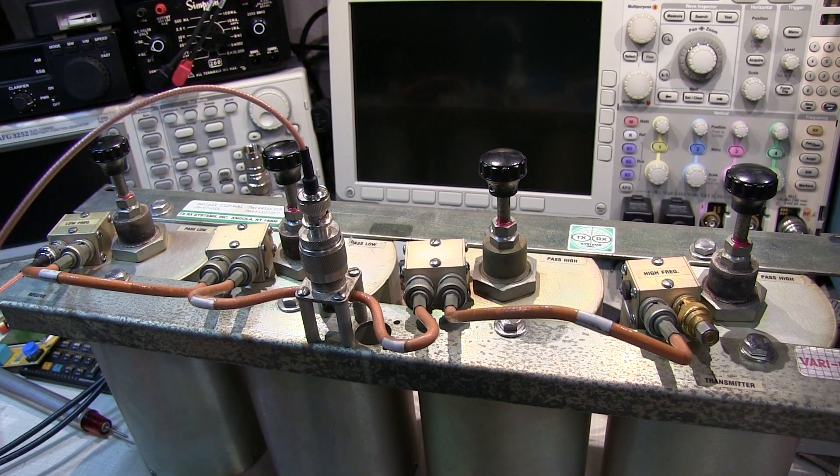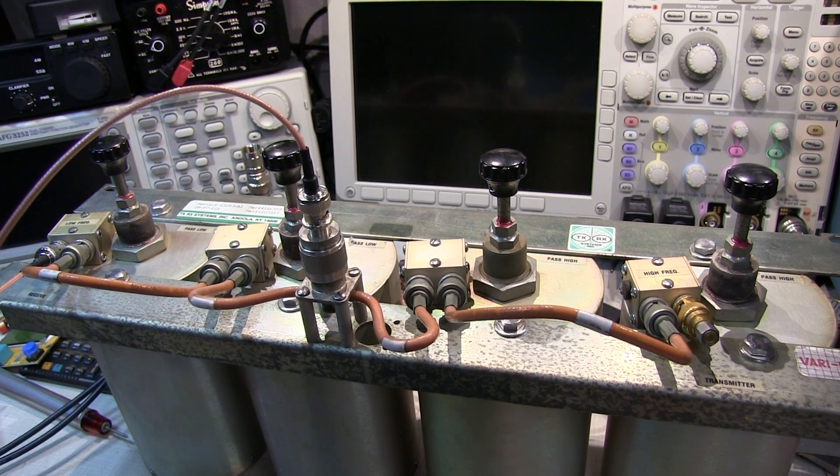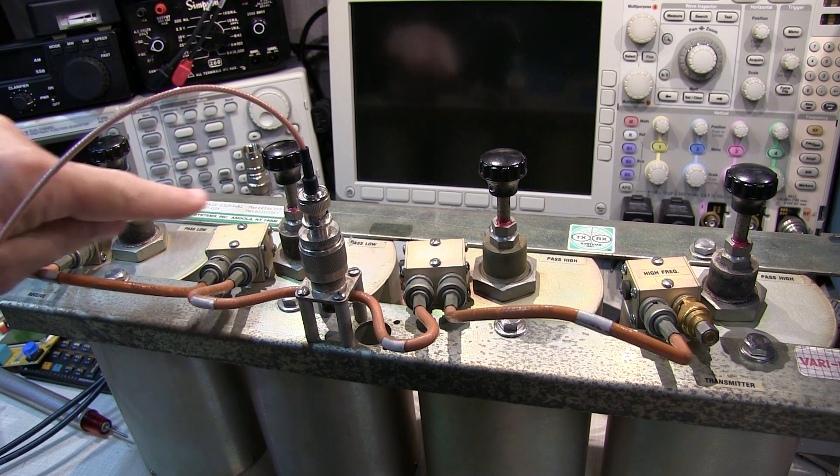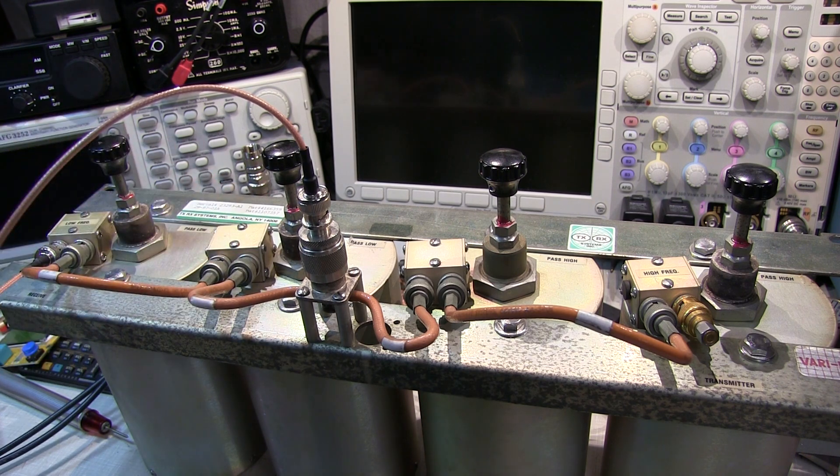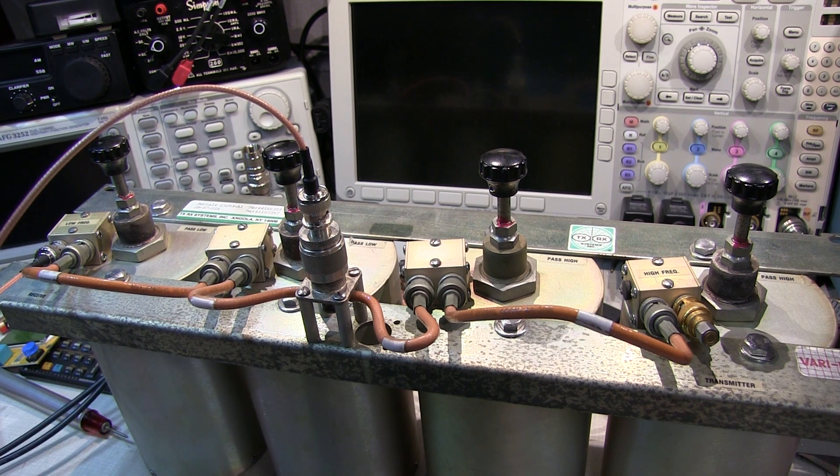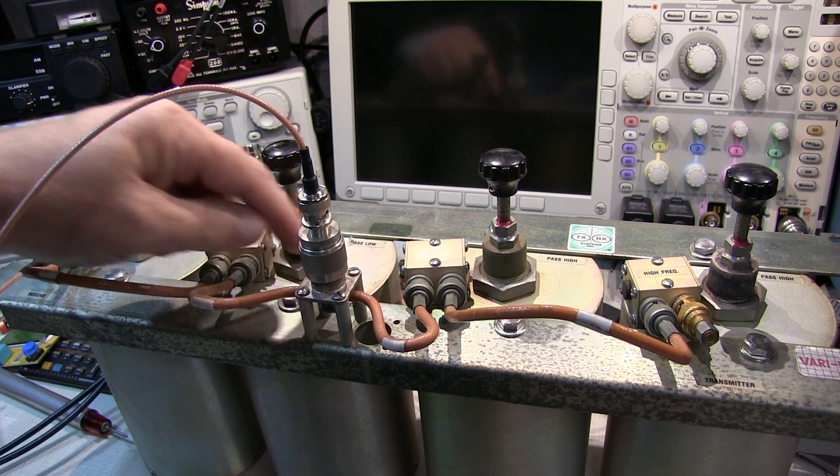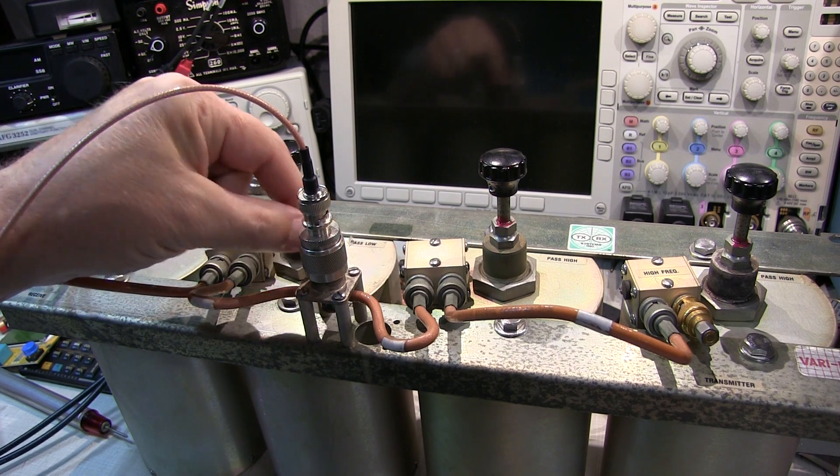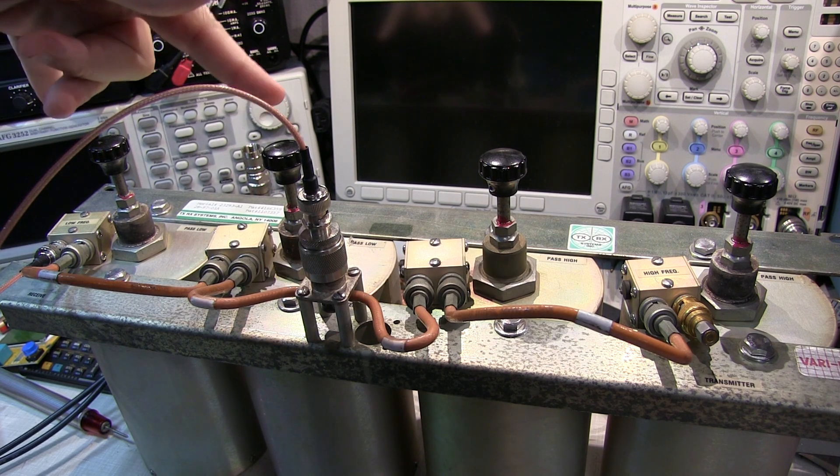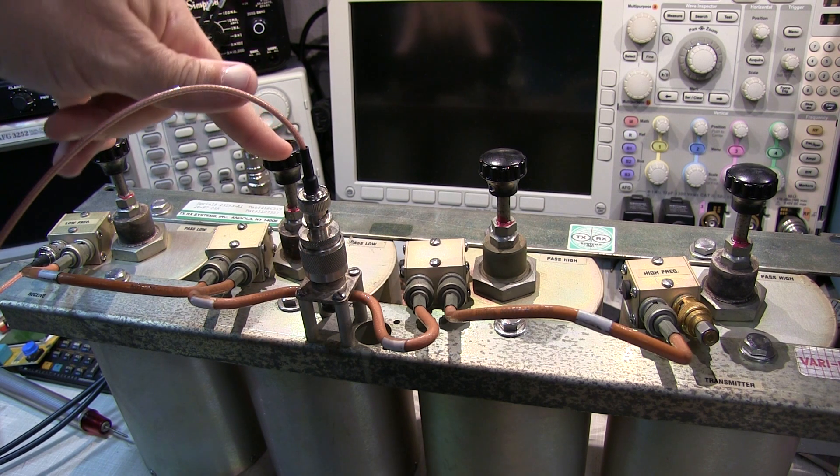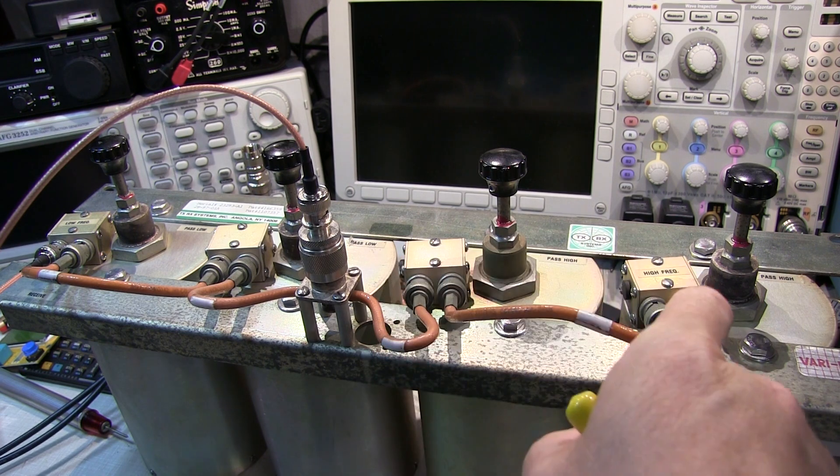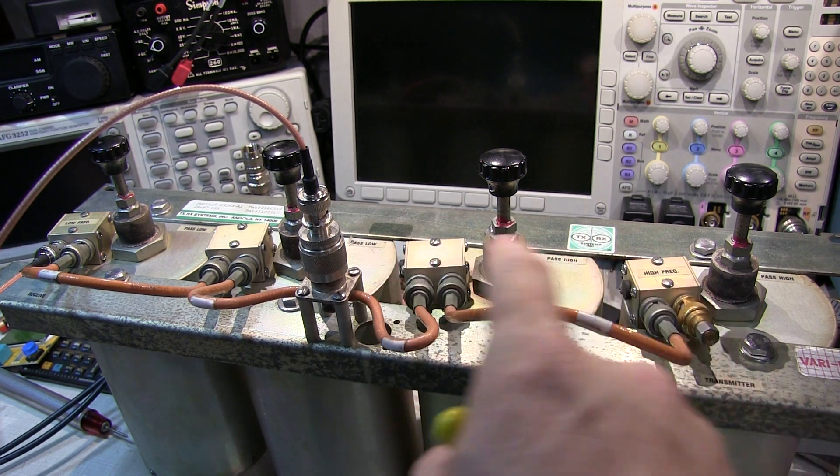The general process for tuning these types of duplexers is to first tune the bandpass filters, and then after you've got those optimized, tune the notch filters. The bandpass filters are tuned by loosening lock nuts and adjusting the plunger up or down. The notch filters are tuned by removing a rubber plug and adjusting with a non-metallic tool.